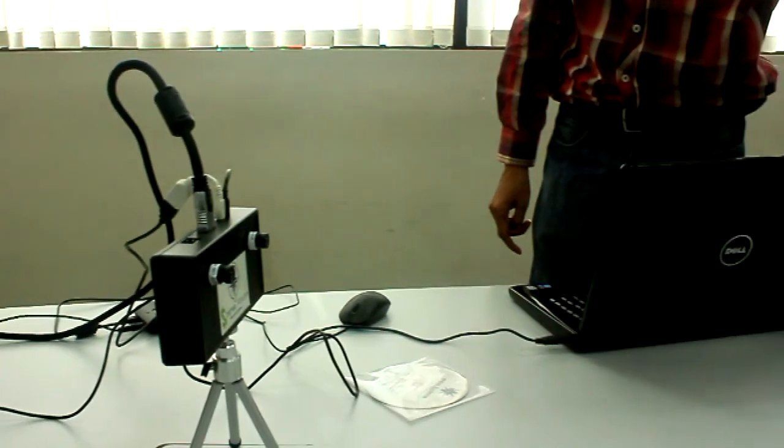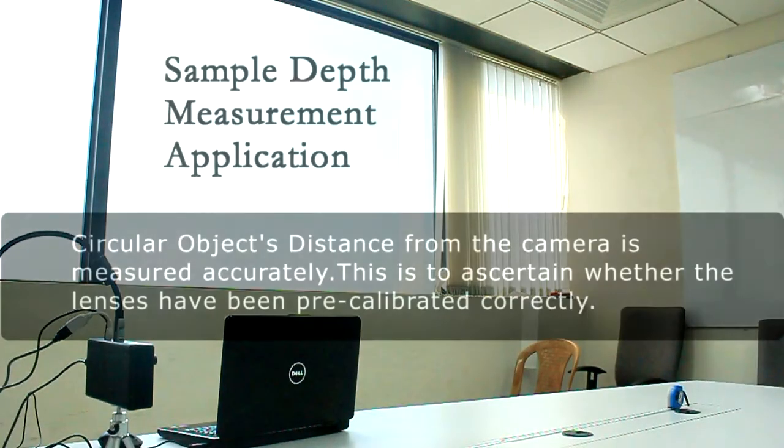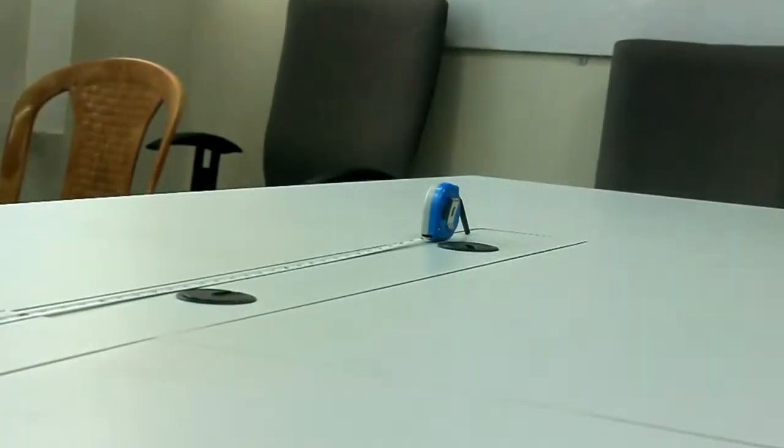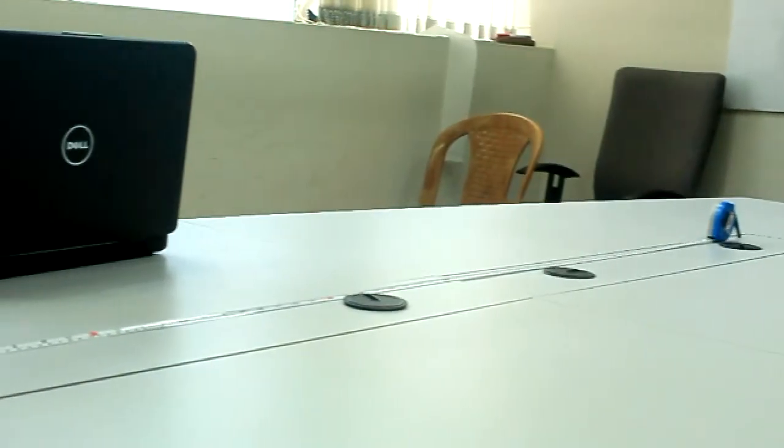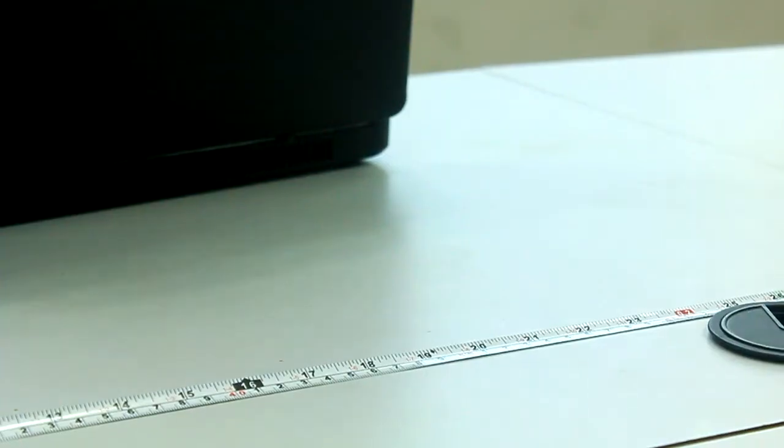Now that everything is working fine, let's run a sample depth measurement application using which we can measure the distance of a circular object from the camera. Before we proceed, don't forget the measurement tape. This will help us ascertain whether the lenses have been calibrated properly. We will now measure the depth of the object kept at 50 cm distance.